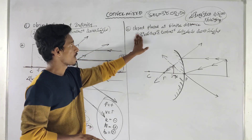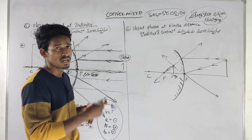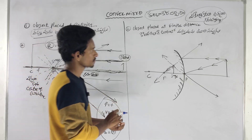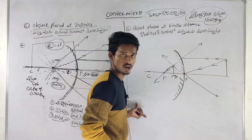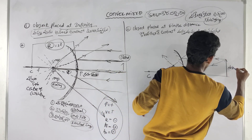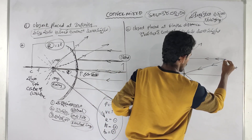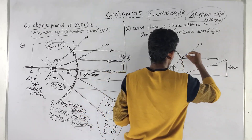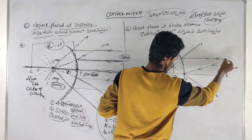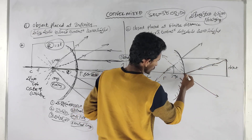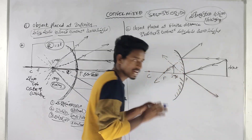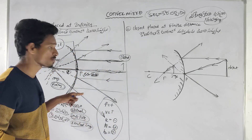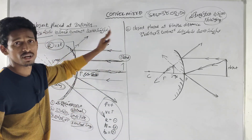Case 2: Object placed at finite distance. We place the object in the same direction. The object is at a finite distance from the mirror. The ray diagram is drawn, and the reflected rays diverge. Using the middle function — the rays do not actually cross, so we extend them behind the mirror.